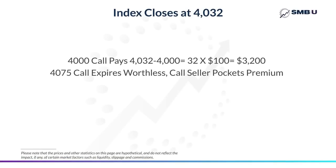So for example, if an index closed at 4032, then the 4000 call would pay off $3,200, because the index closed 32 points above the strike price of the call, which was 4000. However, the 4075 call would expire worthless as the index didn't close above 4075, so the call seller just pockets the premium. So those are the basics of call options on indexes.